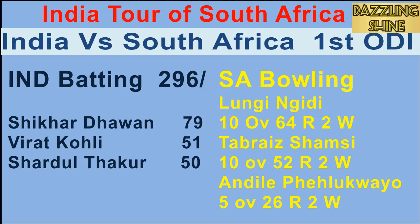Fourth ball of the fifth over, Mokaram to Dhawan — Dhawan comes down the track and aggressively hits it over mid-on for four runs. Fourth ball of the sixth over, Jensen to Dhawan — full and straight, and Dhawan whips it off the pads to the mid-wicket boundary for four runs.